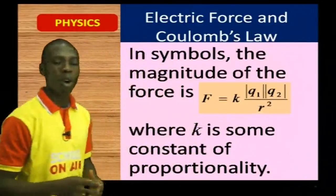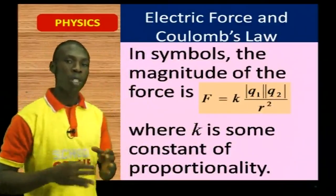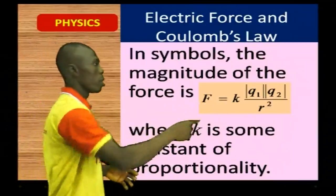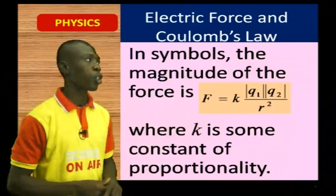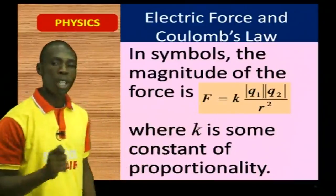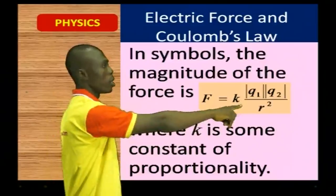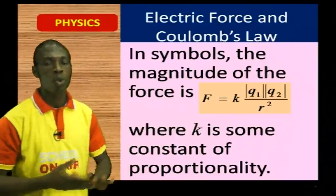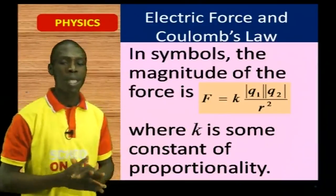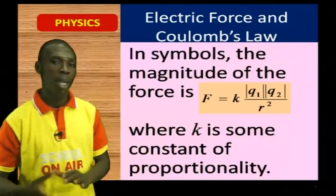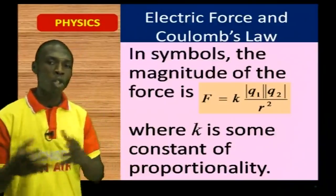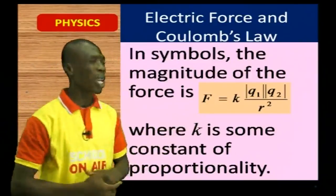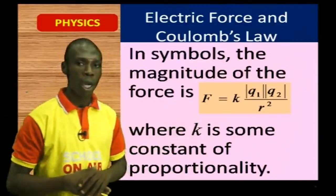This K is the constant of proportionality. When you convert your proportionality sign to an equality sign, we introduce a constant. So this K is the constant of proportionality. Take your pen right now and make a note of this — you're going to need it very often. F = KQ1Q2 / R². You have to keep in mind that we have put the magnitude here — those are parallel lines — talking about the magnitude of the charge such that we do not consider whether it's a negative or positive charge. So F = KQ1Q2 / R², where K is the constant of proportionality.